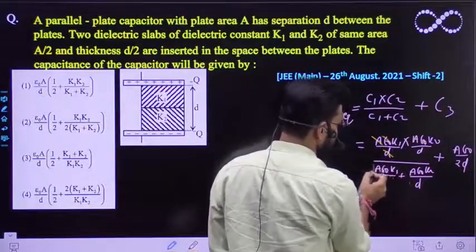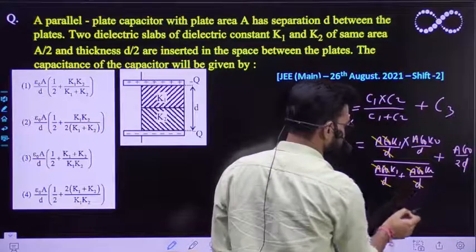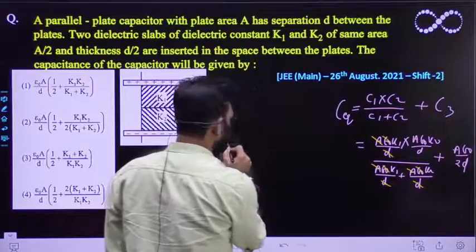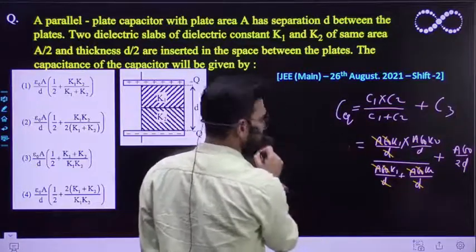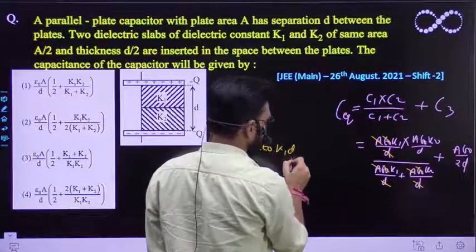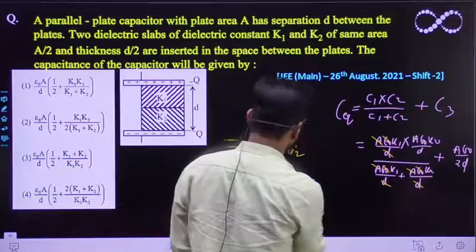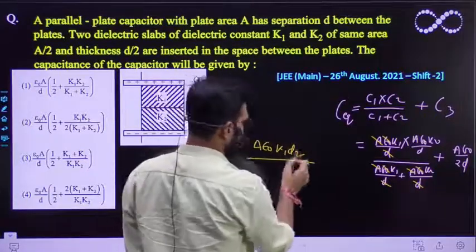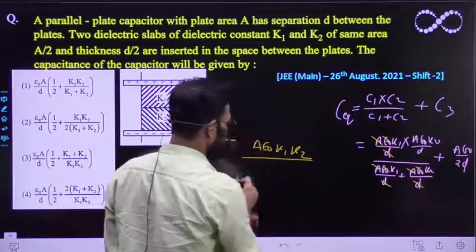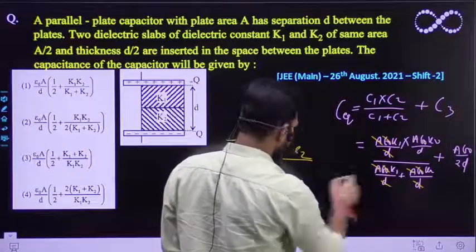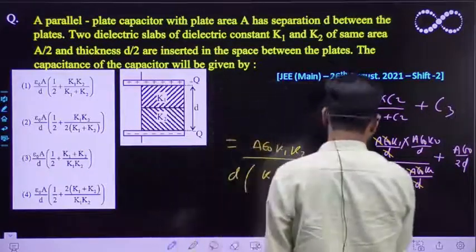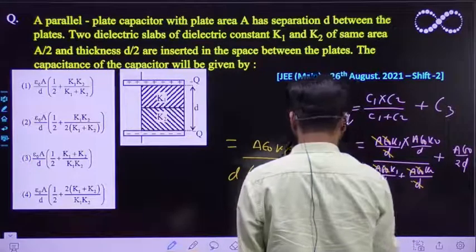Yehi a epsilon naught by D common le lete hai. To yeh cancel out ho jayega. Open niche. To further, you will be getting as epsilon naught by D. To yeh kitna ho jayega? A epsilon naught K1 K2 divided by K1 K2 divided by D. Ab isma se andar bacha jayega K1 plus K2. Aur idhar kitna hooga? It would be a epsilon naught by 2D.